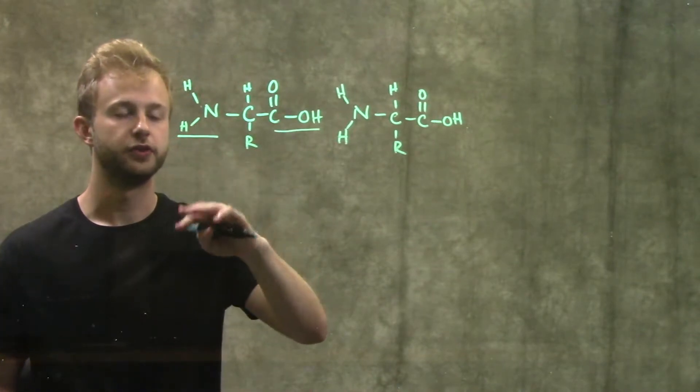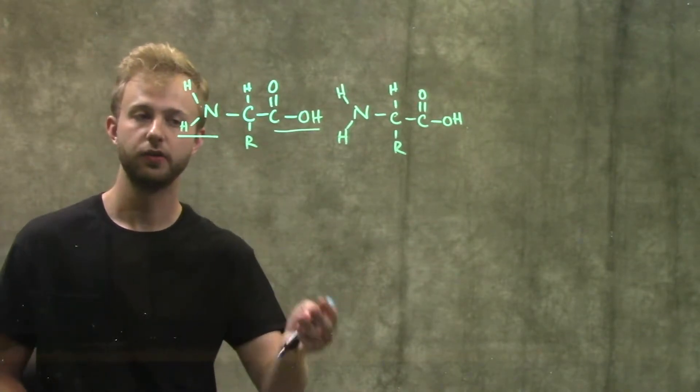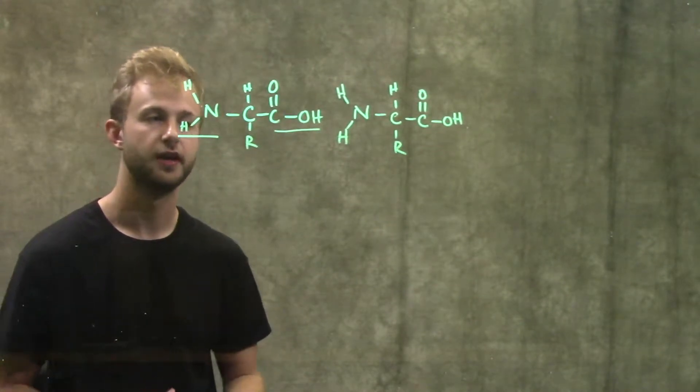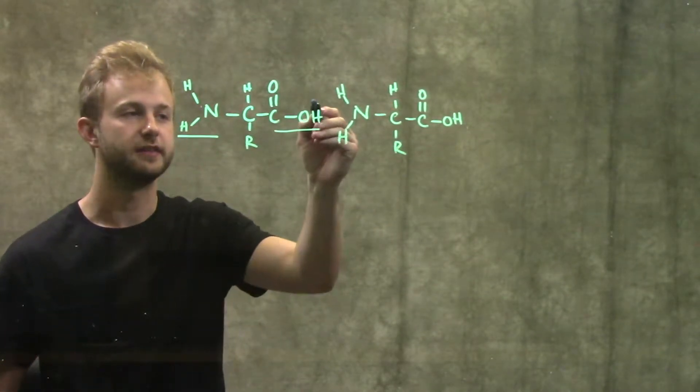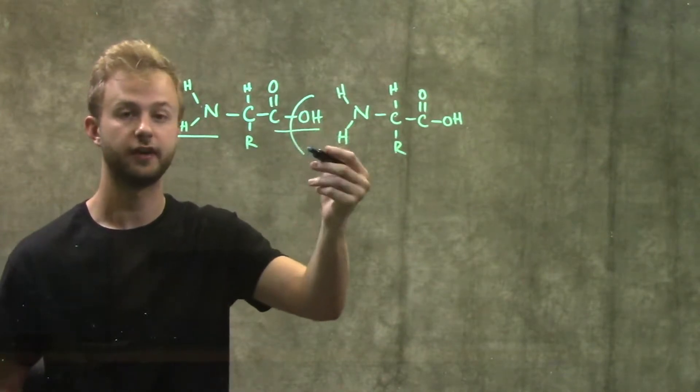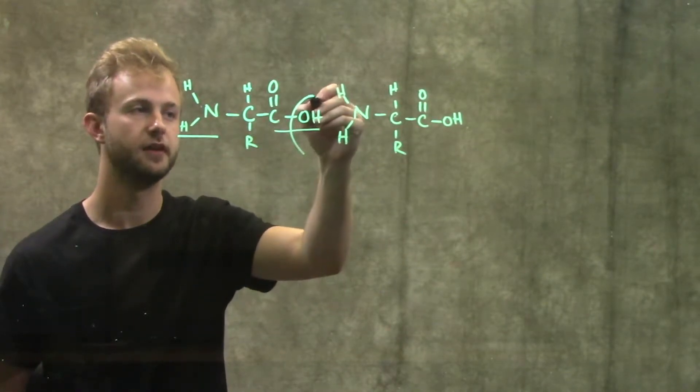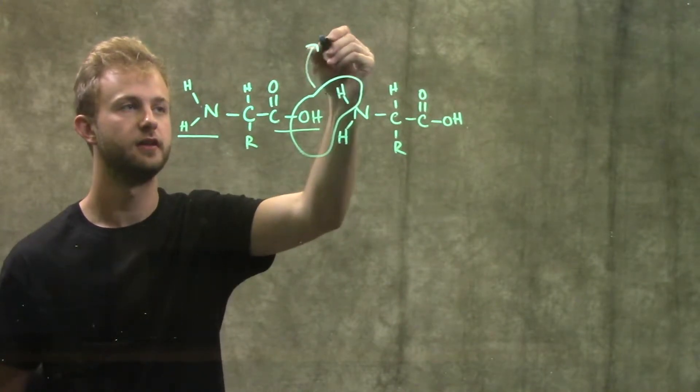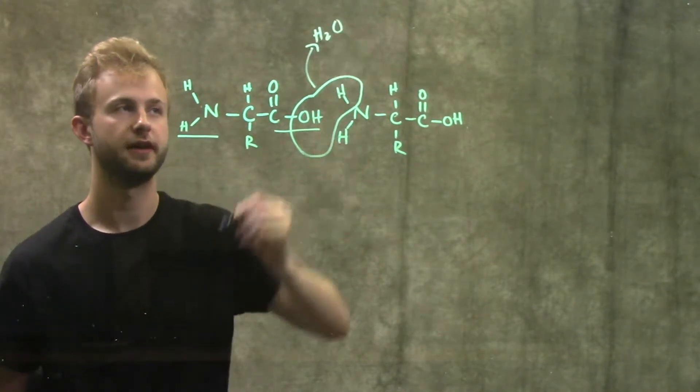Just like how we make any other kind of polymer, these two amino acids are going to be joined together by a dehydration or condensation reaction. The way we're going to do that is we're going to take this hydroxyl group from the carboxylic acid group of the first amino acid and then take a hydrogen from the amino group of the second amino acid and lose those atoms as a molecule of water.